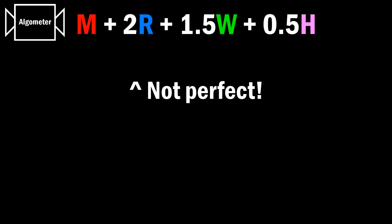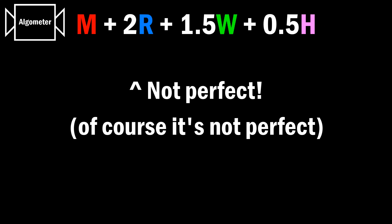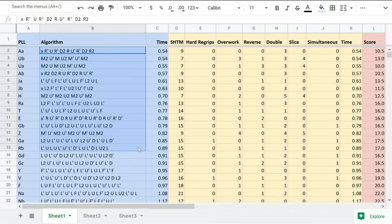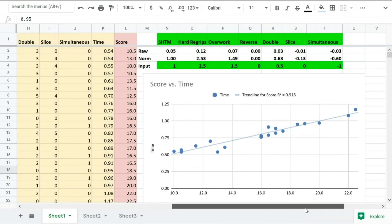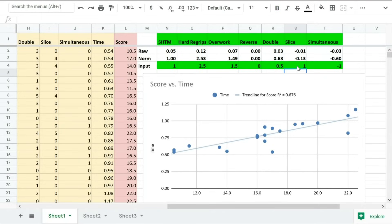Because you shouldn't just blindly trust how this formula works, I've also posted a video that includes all of the data and my method for finding these numbers, as in why are re-grips worth 2 and why is overworking a finger worth 1.5, and so on. So that's linked in the description, and you can check it out after the video.